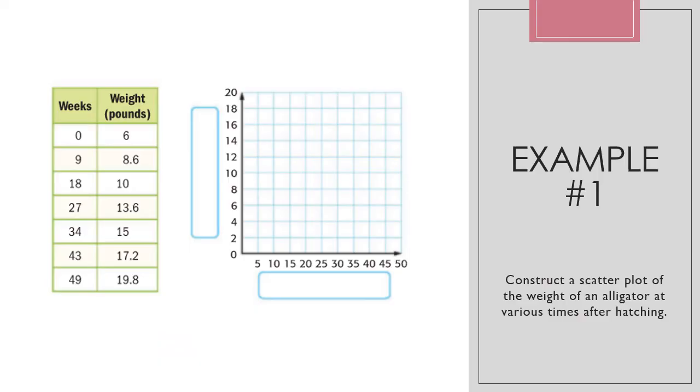Alrighty, let's look at example number one. Construct a scatterplot of the weight of an alligator at various times after hatching. Let's look at our table. On our table, we have a column labeled weeks and we have a column labeled weight. So if we remember this is like a T chart, we have X, our X column, and then we have our Y column. This is basically an ordered pair. So zero comma six, nine comma eight point six, and so forth. So I just need to plot these as an ordered pair.